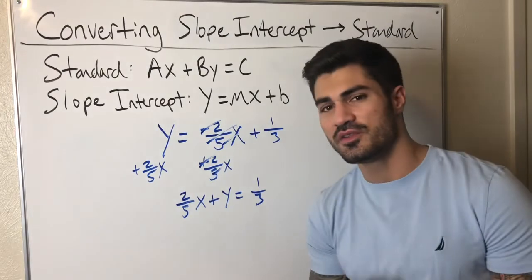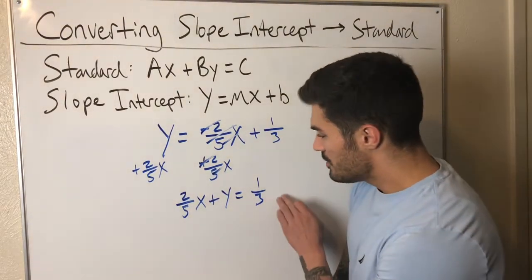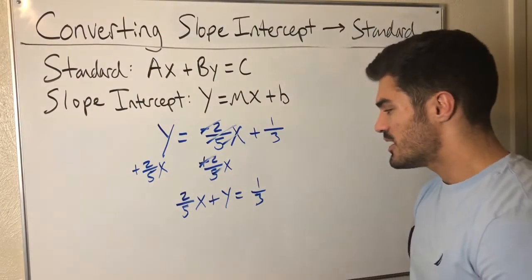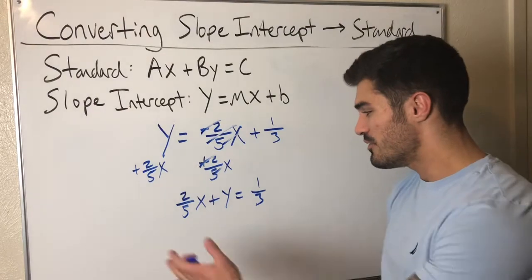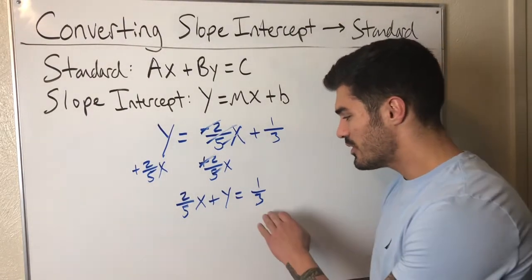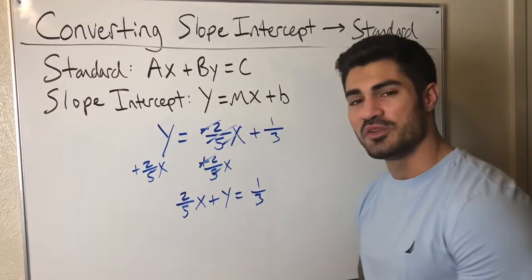Okay, so now I have to get rid of the fractions. So I have one third and two fifths and this is why I say multiply both sides by the least common denominator of whatever fractions you have. Because in this case, if I were to add these two fractions, I would have to find a least common denominator and that would be 15.